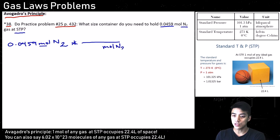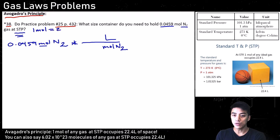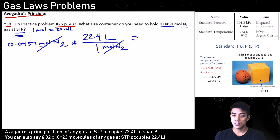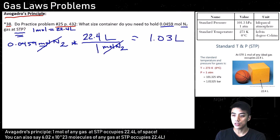Let's set up a conversion. Draw a line — make sure moles of N2 will cross-cancel. Put liters on top. Because it says STP, we know 1 mole equals 22.4 liters. Write in our conversion factor: 22.4 liters over 1 mole. The moles cancel out. Calculate: 0.0459 times 22.4, and we get 1.03 liters.